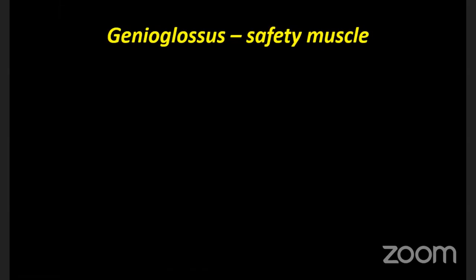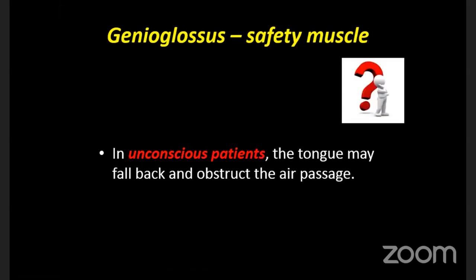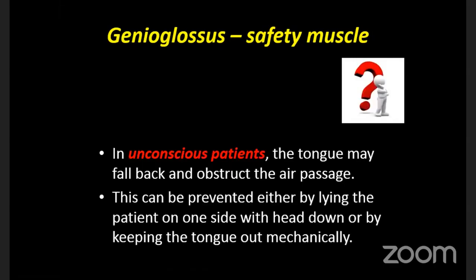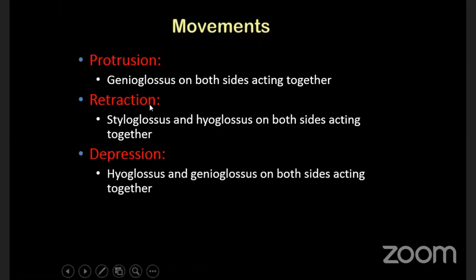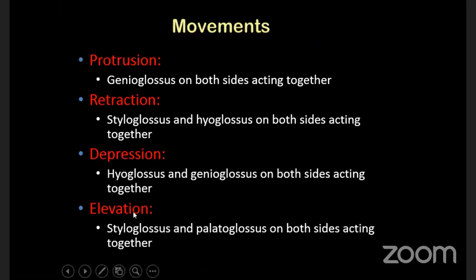A very important clinical point: the genioglossus is otherwise called the safety muscle of the tongue. It protrudes the tongue, prevents the tongue from falling backwards, and keeps it positioned slightly forward. When a person lies down and this muscle is paralyzed, the tongue falls backwards and closes the laryngeal cavity. In an unconscious person, the tongue may fall back and obstruct the airway, so you must prevent this by lying the patient on one side with the head down, or by keeping the tongue out mechanically.